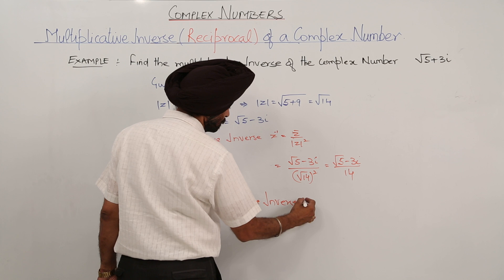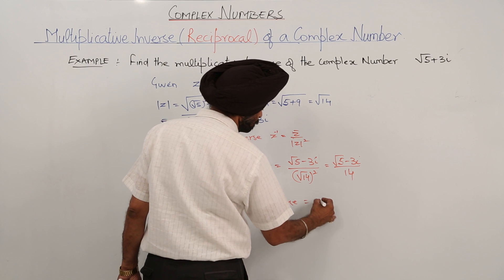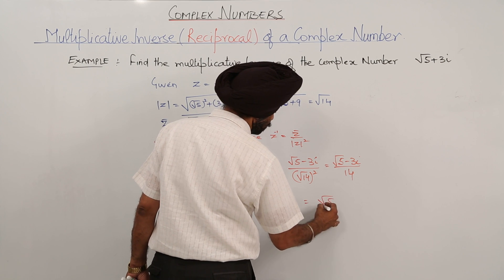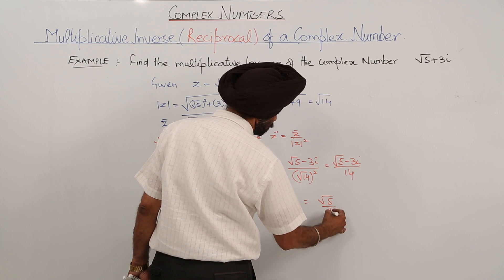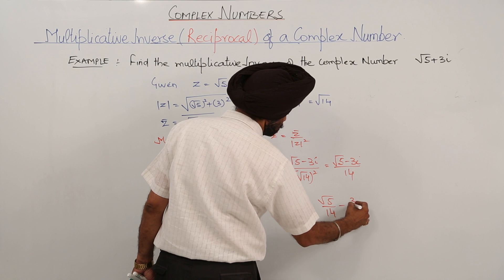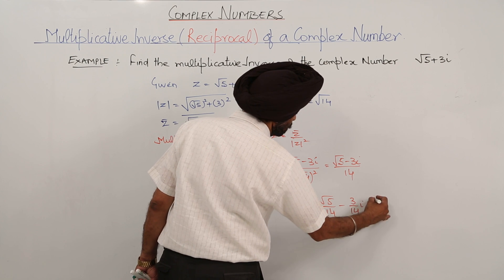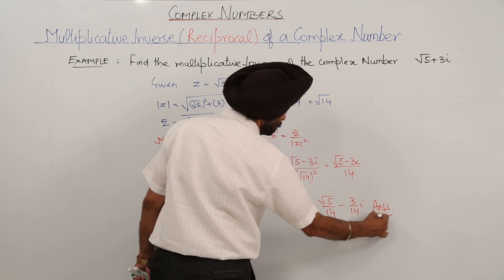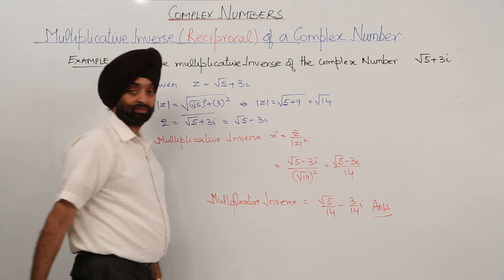The multiplicative inverse is equal to √5/14 minus 3/14 i.